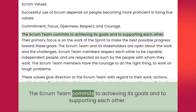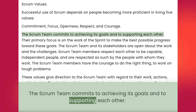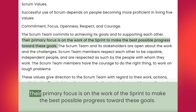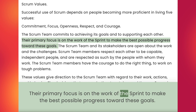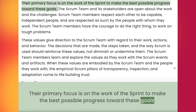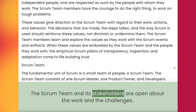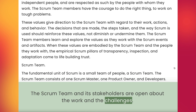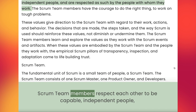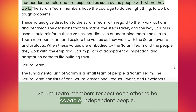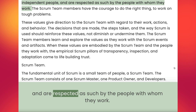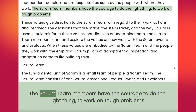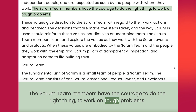The Scrum team commits to achieving its goals and to supporting each other. Their primary focus is on the work of the sprint to make the best possible progress toward these goals. The Scrum team and its stakeholders are open about the work and the challenges. Scrum team members respect each other to be capable, independent people and are respected as such by the people with whom they work. The Scrum team members have the courage to do the right thing, to work on tough problems.